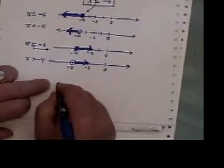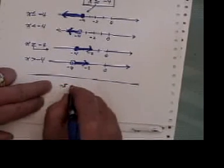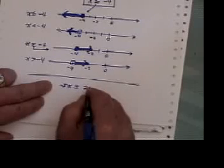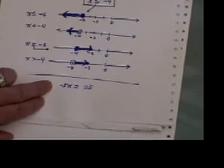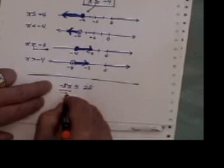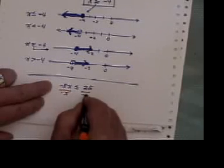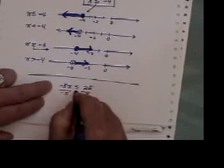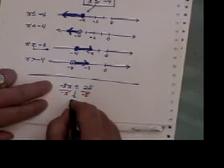Now there's one last rule about inequalities. If on an inequality you ever get something happening like this, where you have to divide both sides by a negative number, what happens is the less than sign or the greater than sign, whichever way it is, gets switched around.